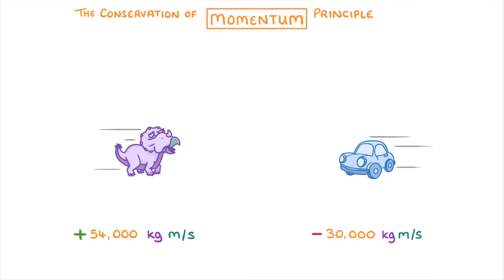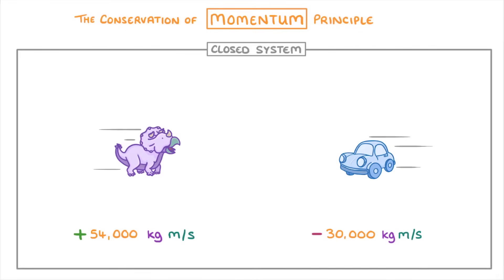The next thing to know is the conservation of momentum principle, which is the idea that in a closed system, the total momentum before an event, like a collision, is exactly the same as the total momentum after the event.